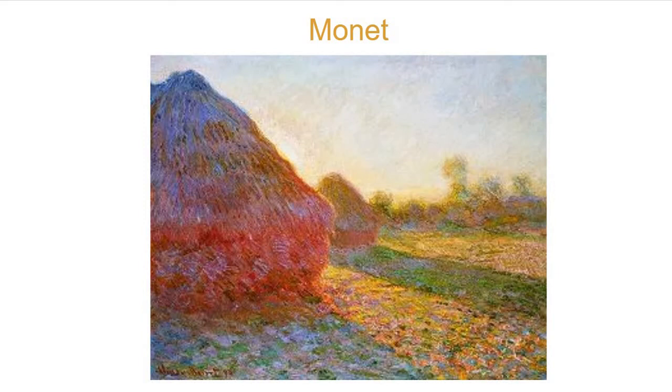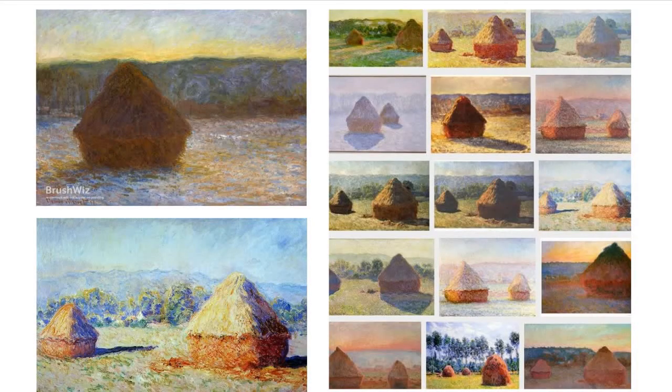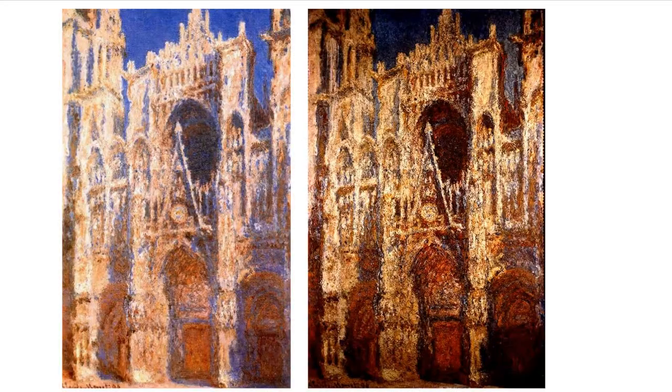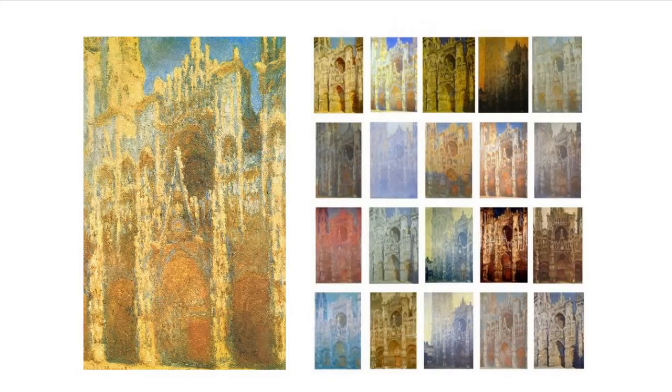Monet used to like to paint outdoors. He'd grab a canvas and start painting haystacks. He'd work for about an hour, and then the sun would change, so he'd put down that painting and get a different canvas. He'd keep going through that, day after day. Over the course of time he'd have all these different-looking haystacks — really the same haystack, but at different times of the day. He did the same thing with cathedrals. Look at all these paintings of cathedrals.